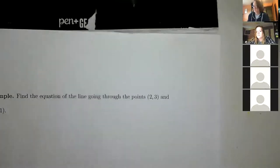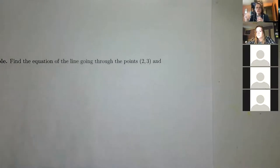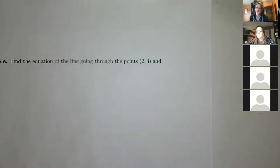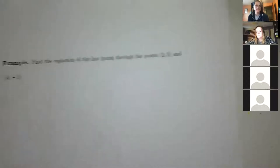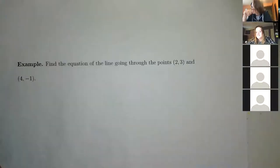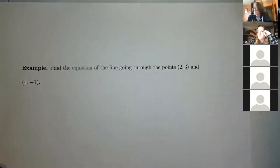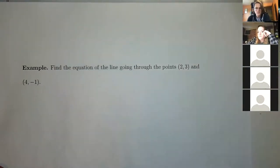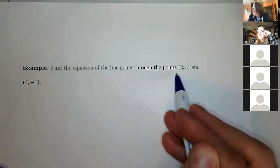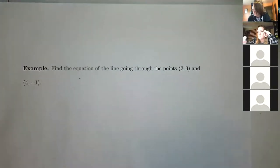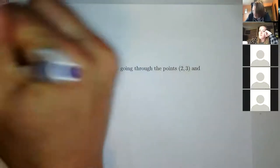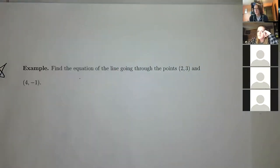My dog is trying to hide his treat — he digs on the comforter thinking it's dirt. Anyway, this next problem is not an application but a straightforward algebra problem. Find the equation of the line going through the points (2, 3) and (4, -1). We haven't done this yet, and it's an important skill — we'll use it in the project for this section.